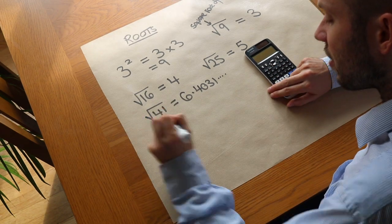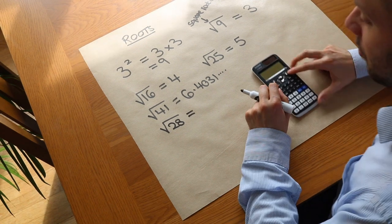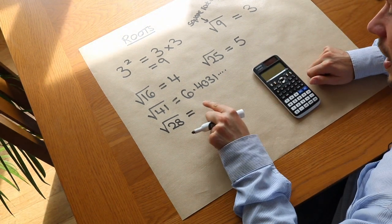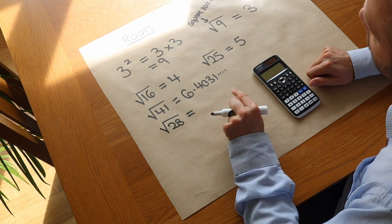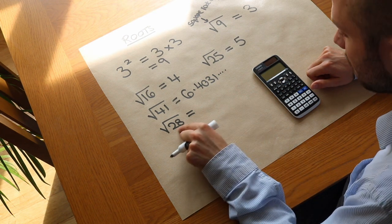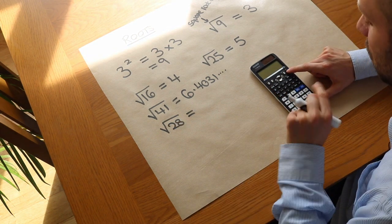Similarly, if we had the square root of 28, well it'd be hard to do without a calculator. But we know that 5 squared gives you 25, which is smaller than 28, whereas 6 squared gives you 36, which is bigger. So the square root of 28 must lie somewhere between 5 and 6.